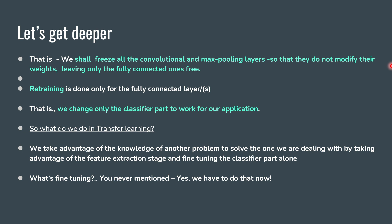We shall freeze all the convolution and max pooling layers so that they do not modify their weights, leaving only the fully connected ones free. Retraining is done only on the fully connected layers — that is, we change the classifier part to make it fit for our application. This is called transfer learning exactly. We take the advantage of the knowledge of another problem to solve the one we are dealing with, by leveraging the feature extraction stage and fine tuning the classifier part alone.